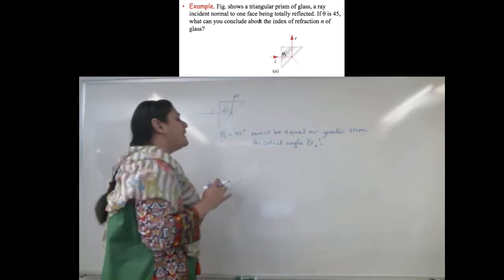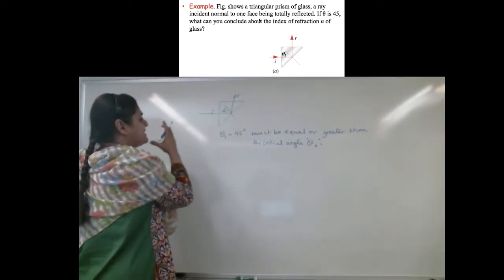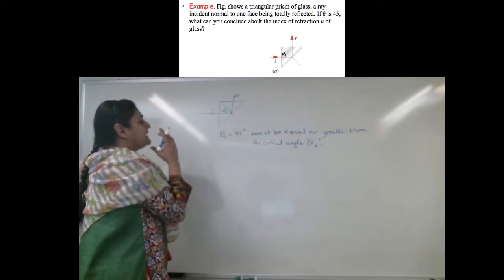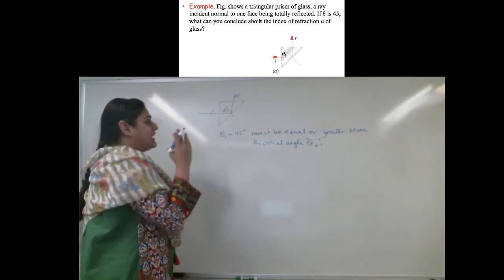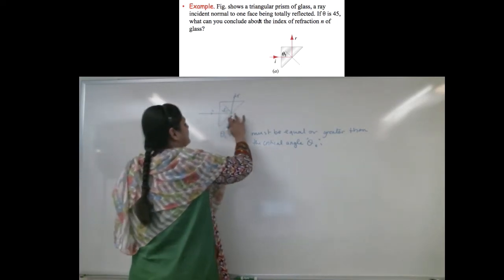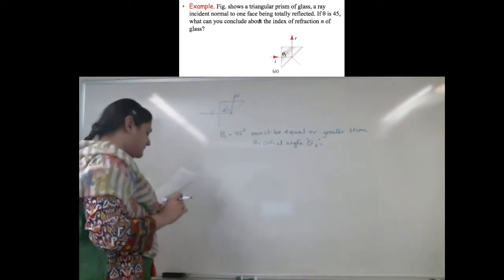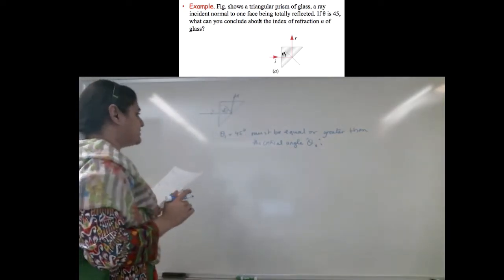Why do I know that? I know that because this ray is being totally internally reflected. If this was not true, then part of it will be refracted out as it comes here. But I see that it is totally internally reflected.